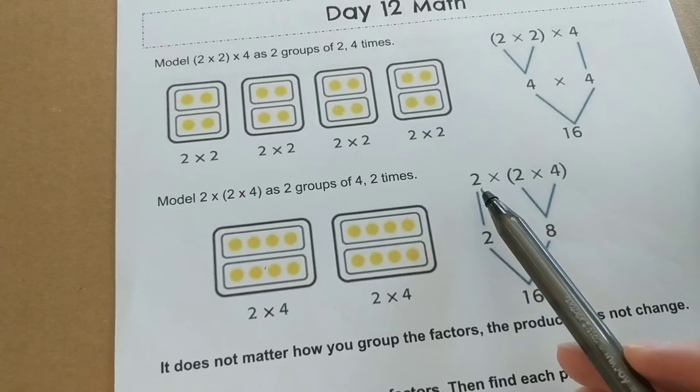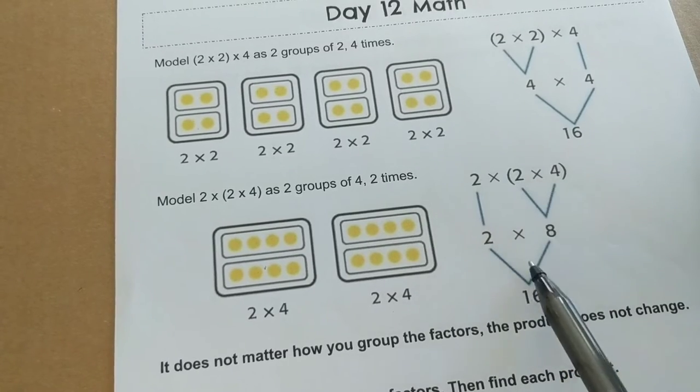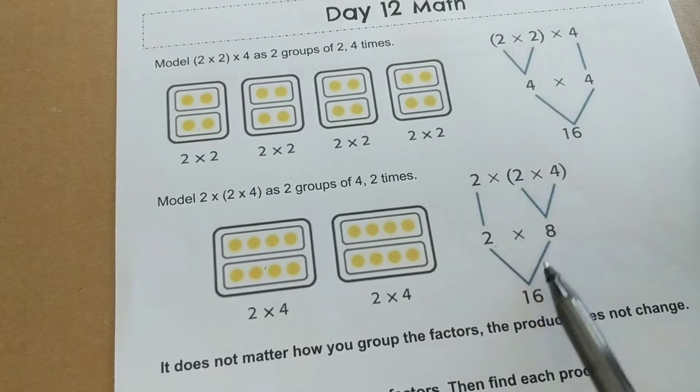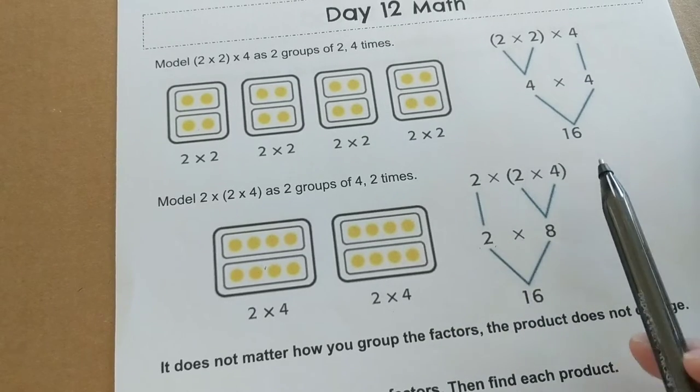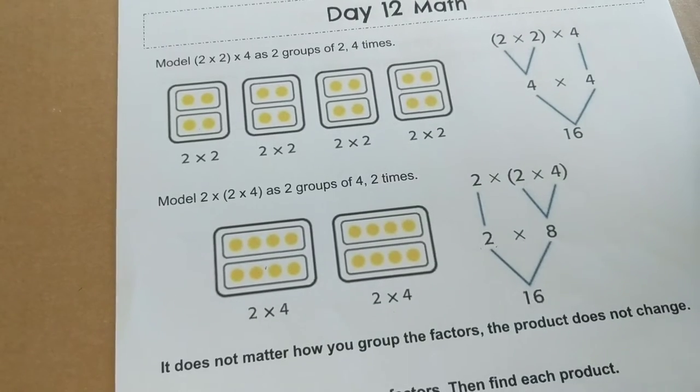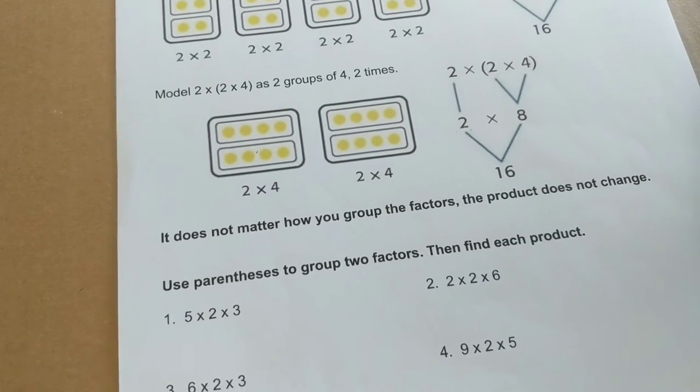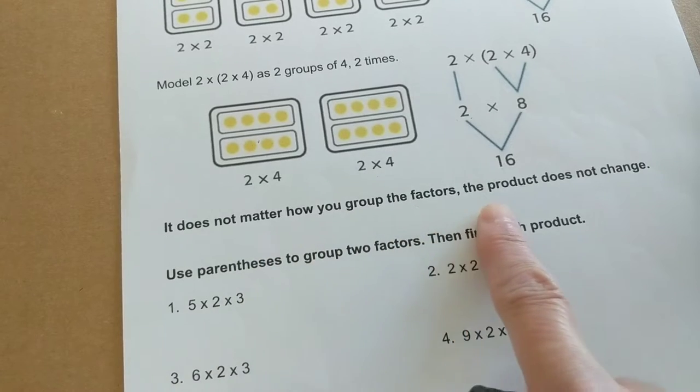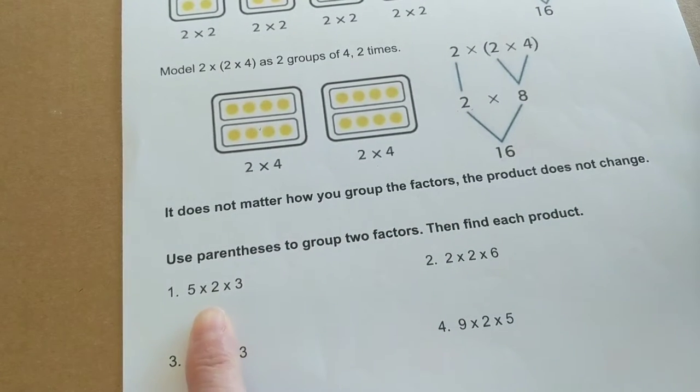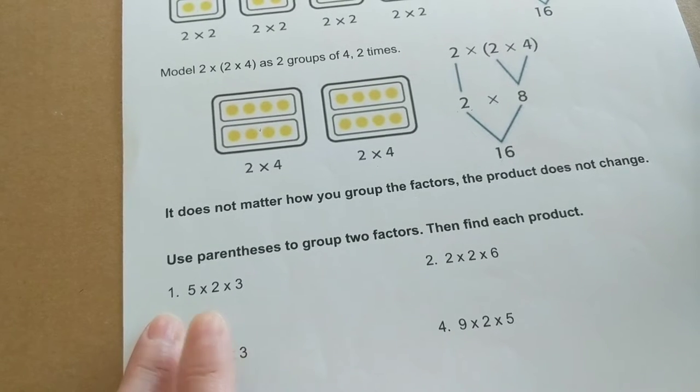And the reason I'm making two groups is because of that first number. All right, so two times two times four. Bring down your two. Two times four is eight. Two times eight equals 16. Both of these answers equal 16. Whichever way you do it is fine. What I'd like you to do is decide. It says it does not matter how you group the factors. The product does not change. I want you to decide which of the factors you should group first.